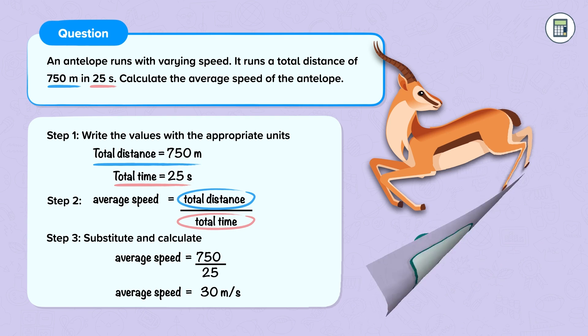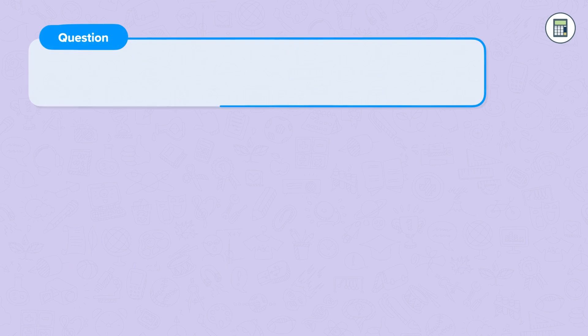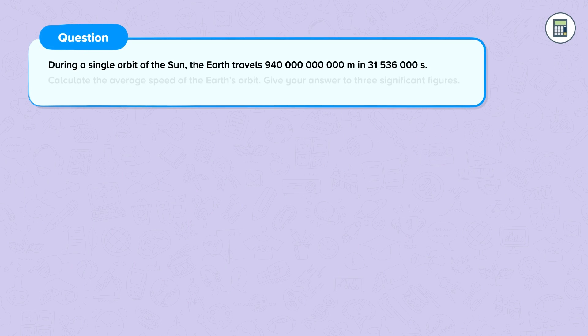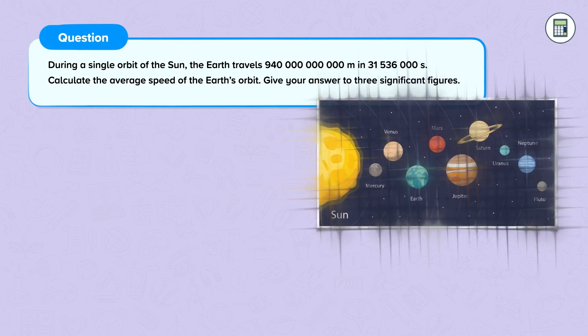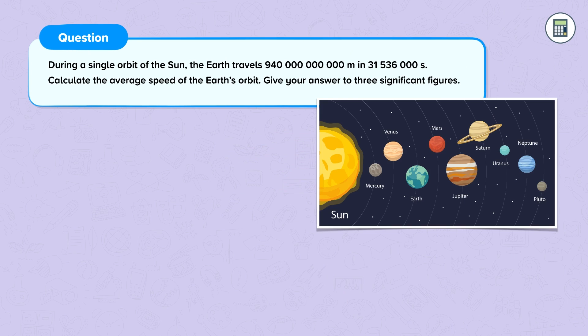Now let's have a look at another example. During a single orbit of the Sun, the Earth travels 940 billion metres in 31,536,000 seconds. Calculate the average speed of the Earth's orbit. Give your answer to three significant figures.